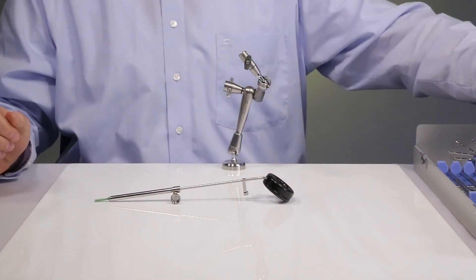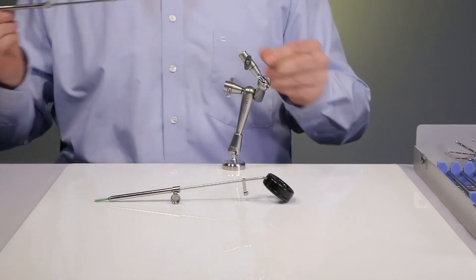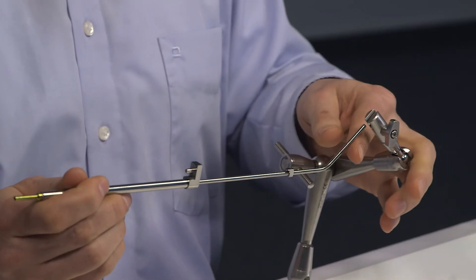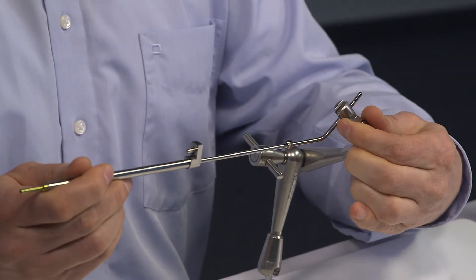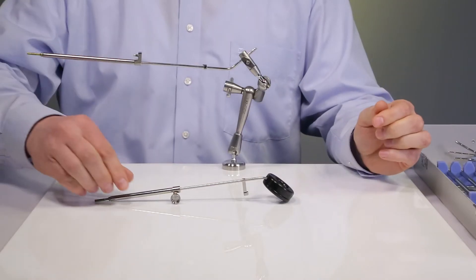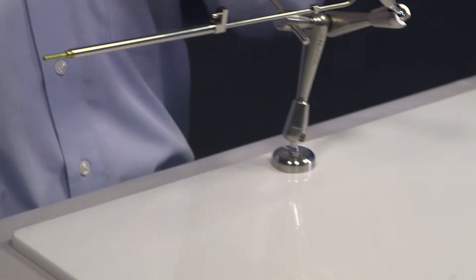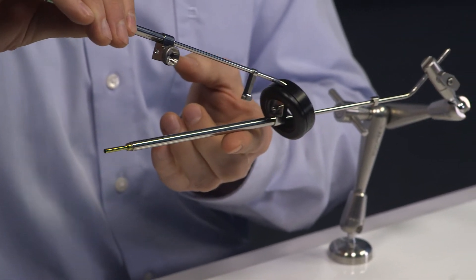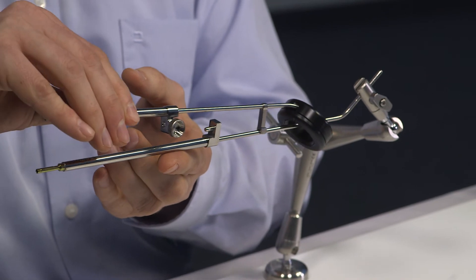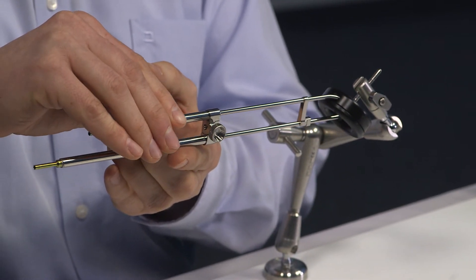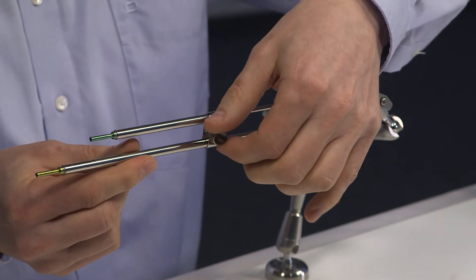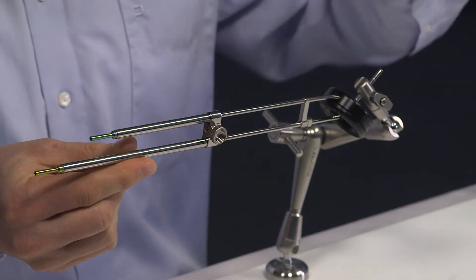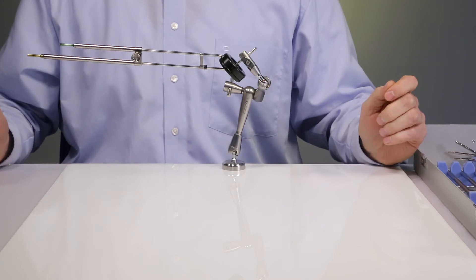I now select the intrauterine tube and simulate the insertion. The ring applicator is now guided over the IU tube and fixed into position with the side screw. Now the assembly is complete.